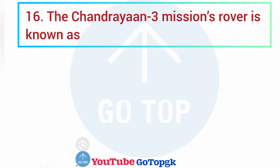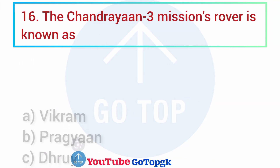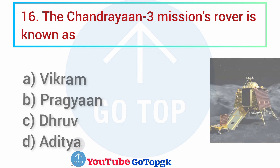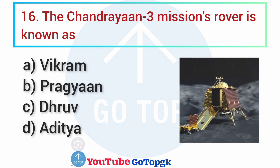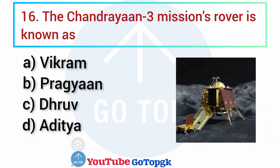Question No. 16. The Chandrayaan-3 mission rover is known as: Options: A. Vikram, B. Pragyan, C. Dhruv, D. Aditya. Your correct answer is option B: Pragyan.